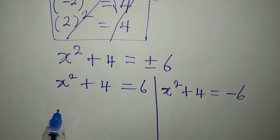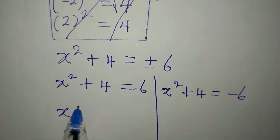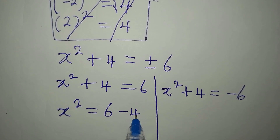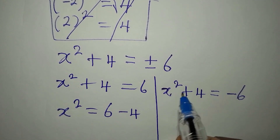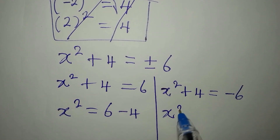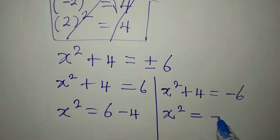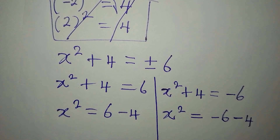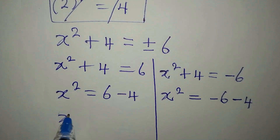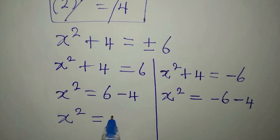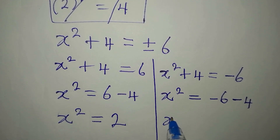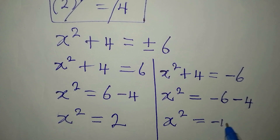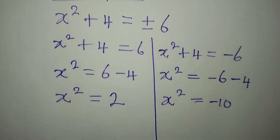From the first equation, x squared equals 6 minus 4, which gives x squared equals 2. From the second equation, x squared equals negative 6 minus 4, which gives x squared equals negative 10.